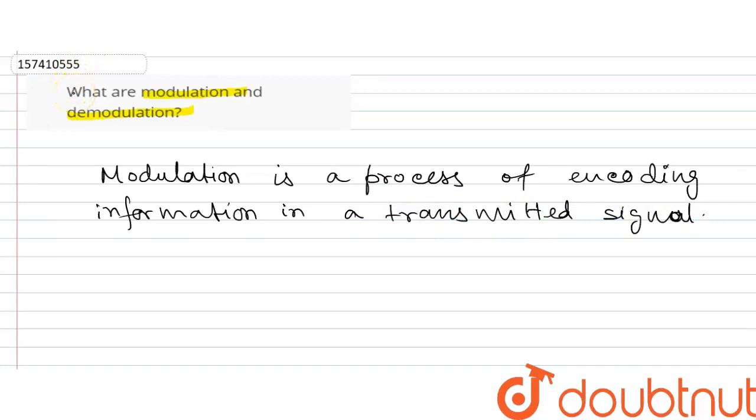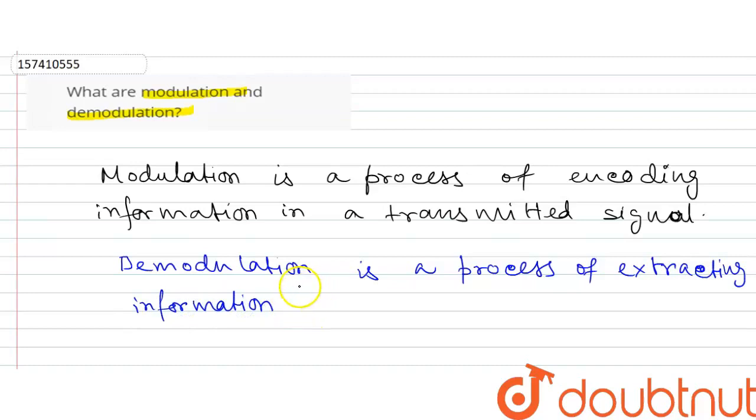Demodulation is the process of extracting information from the transmitted signal. So you should know that one is encoding and the other is extracting.